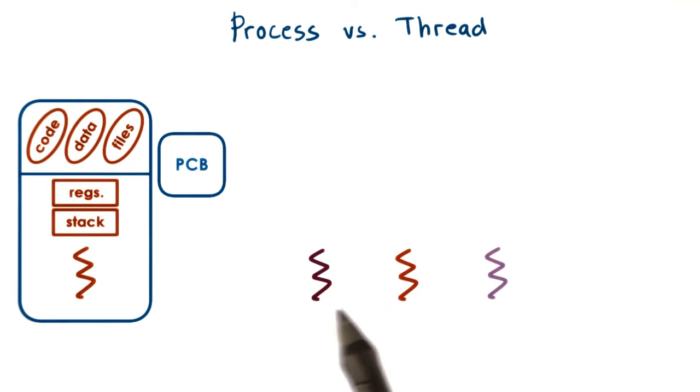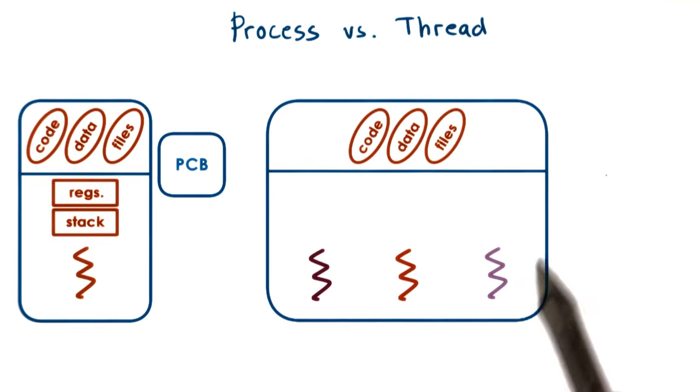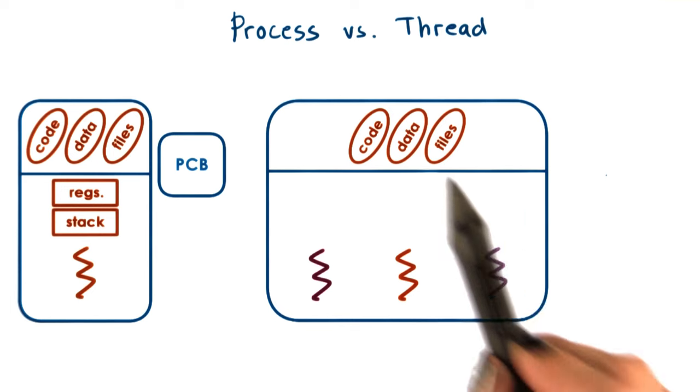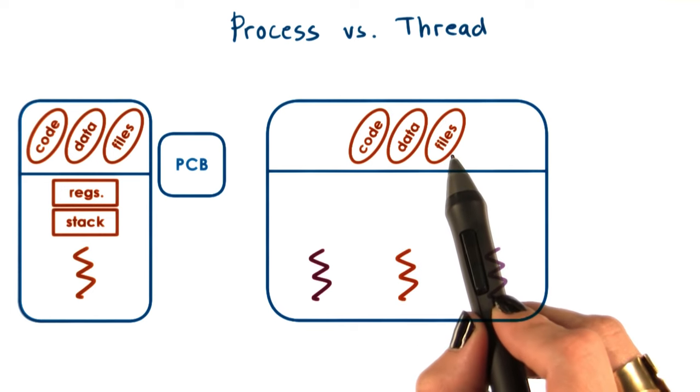Threads, we said, represent multiple independent execution contexts. They're part of the same virtual address space, which means that they will share all of the virtual to physical address mappings. They will share all the code, data, files.